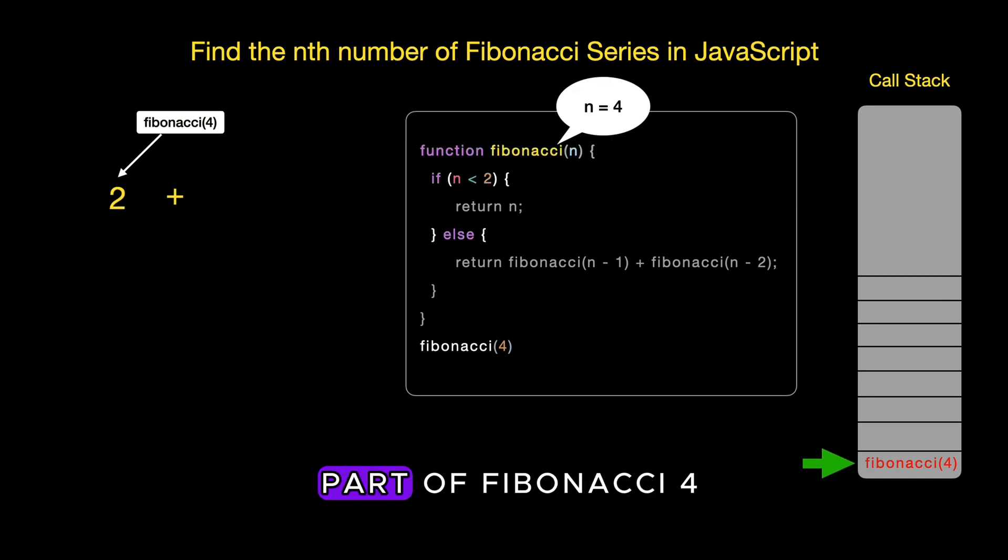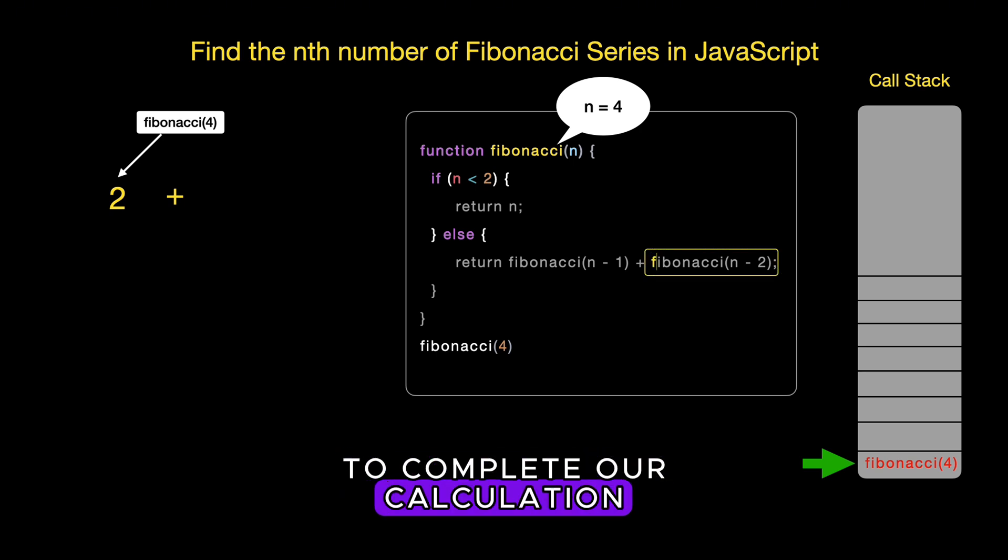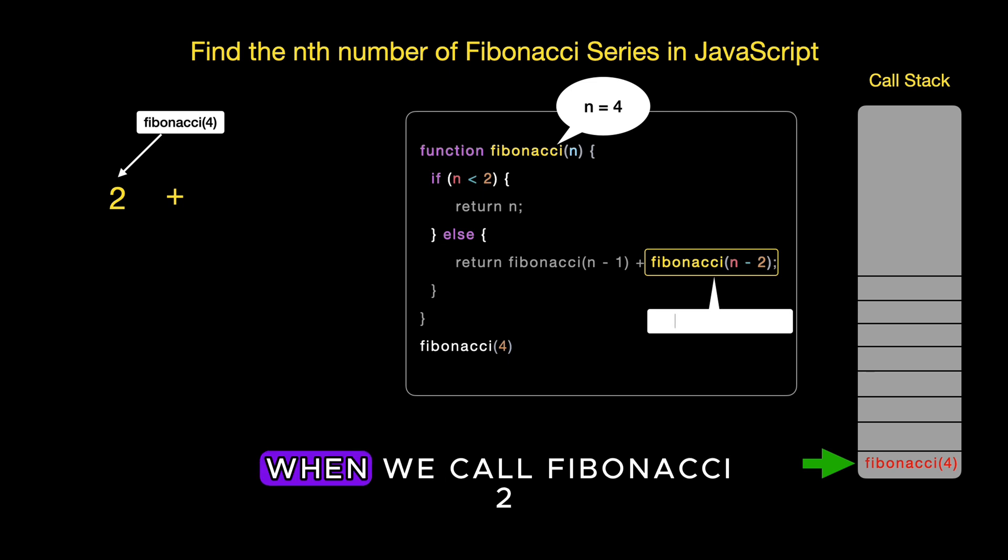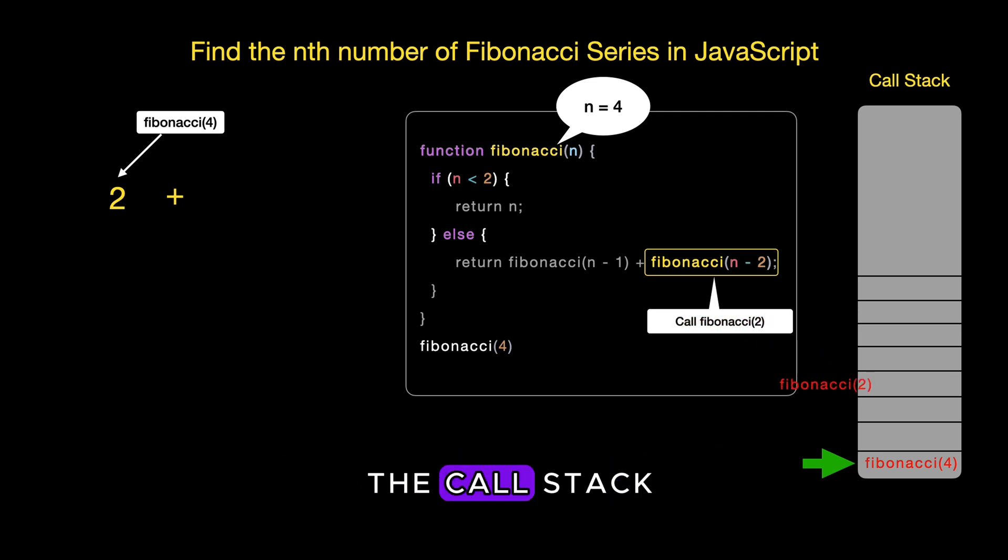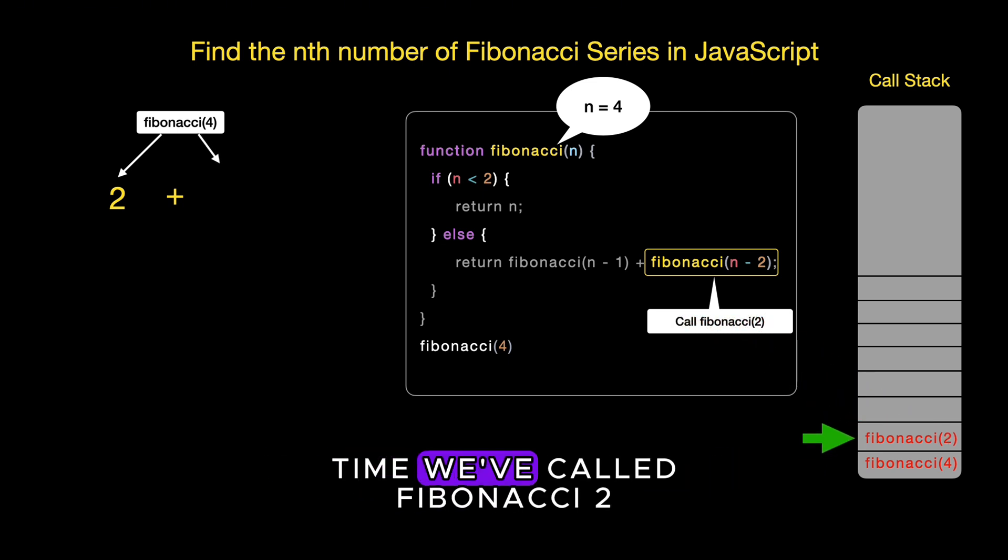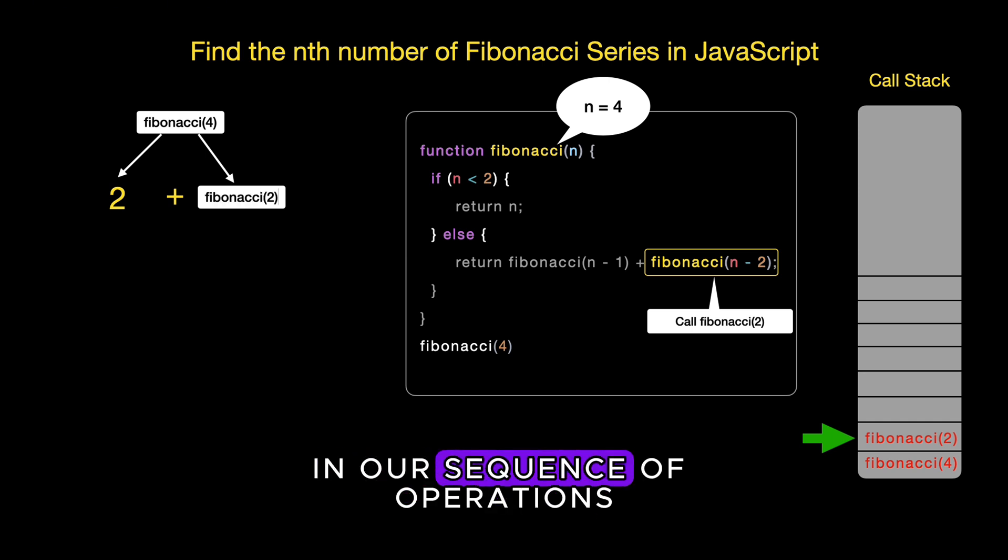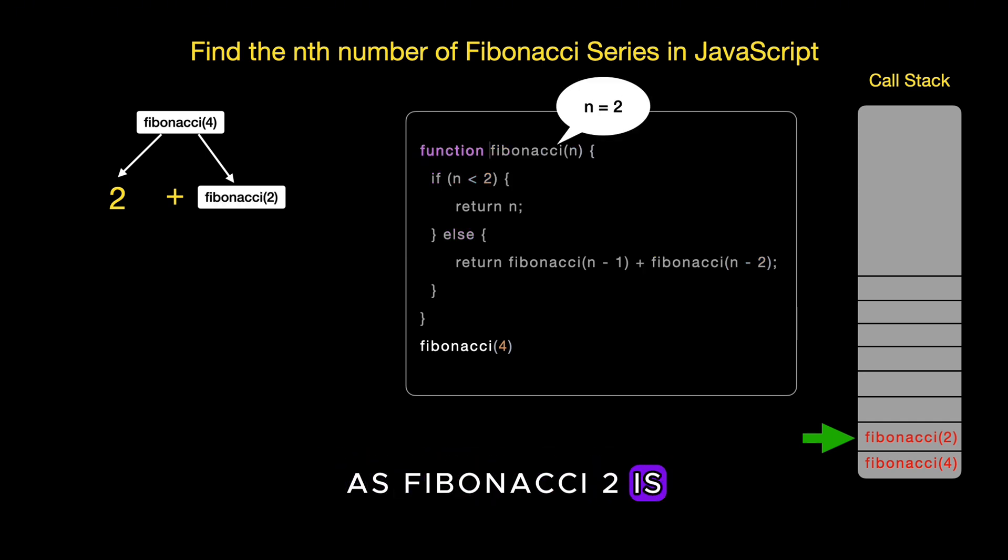After computing the left part of Fibonacci 4, which is Fibonacci 3, we now need to address the other part required to complete our calculation, Fibonacci 2. When we call Fibonacci 2, we add it to the call stack. This isn't the first time we've called Fibonacci 2 in our sequence of operations. As Fibonacci 2 is not less than 2, the function needs to calculate Fibonacci 1 and Fibonacci 0 to determine its value.